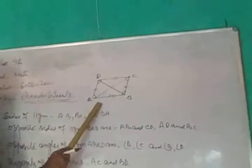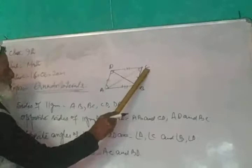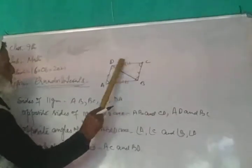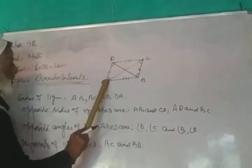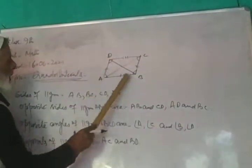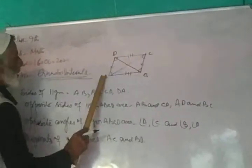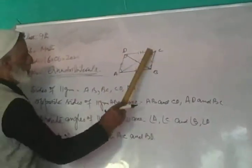Now we are going to look at a parallelogram. We have 4 sides: AB, BC, CD, and DA. The opposite sides are AB and CD, and AD and BC.